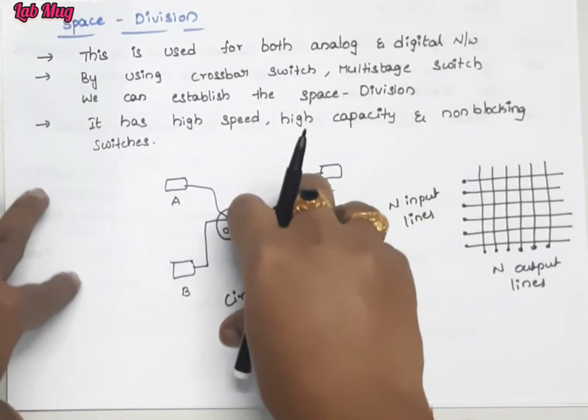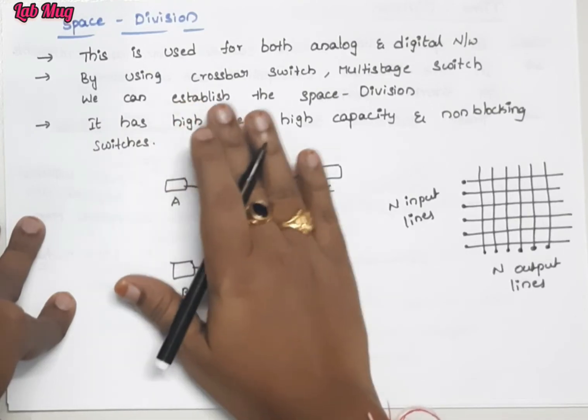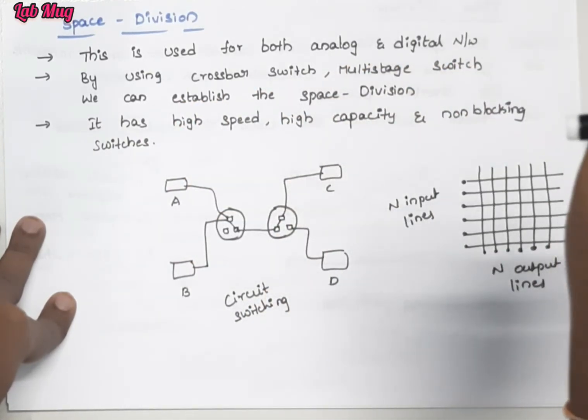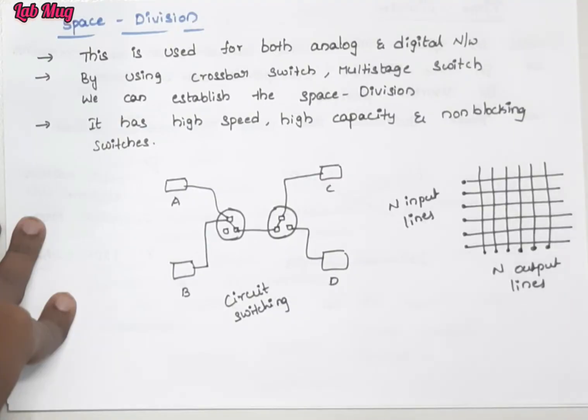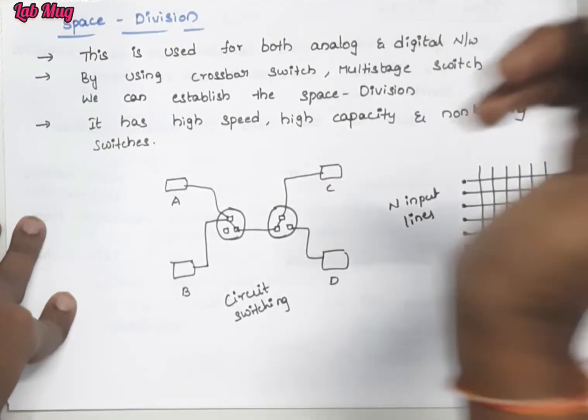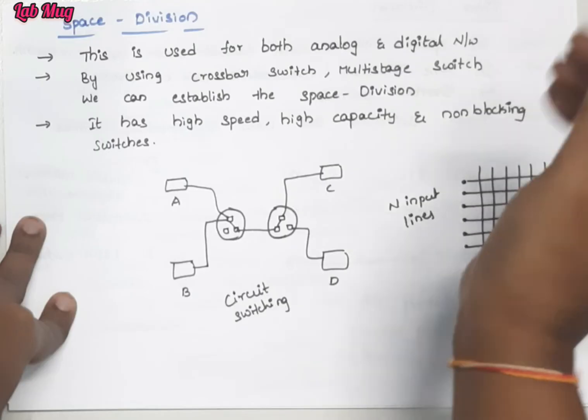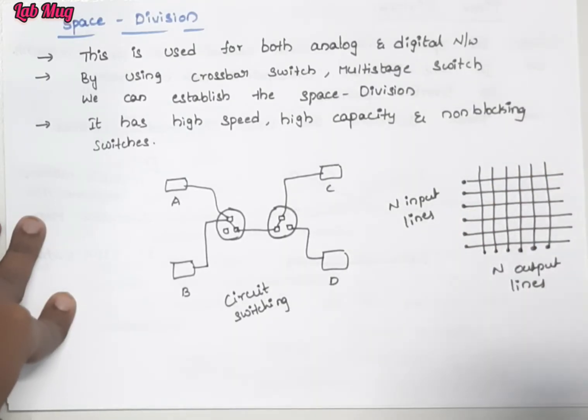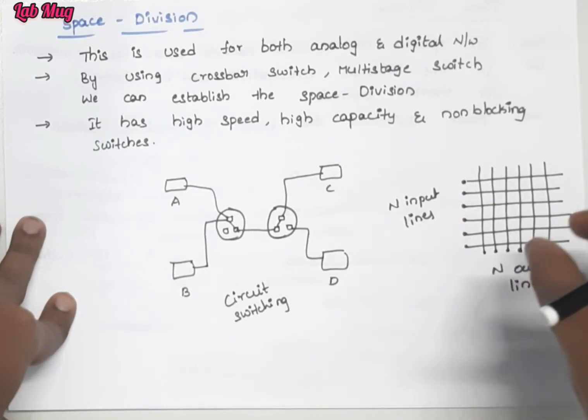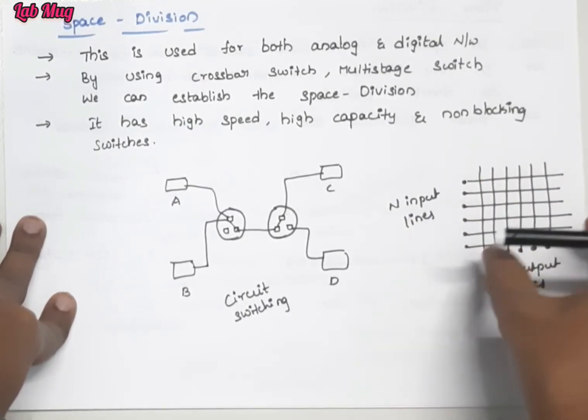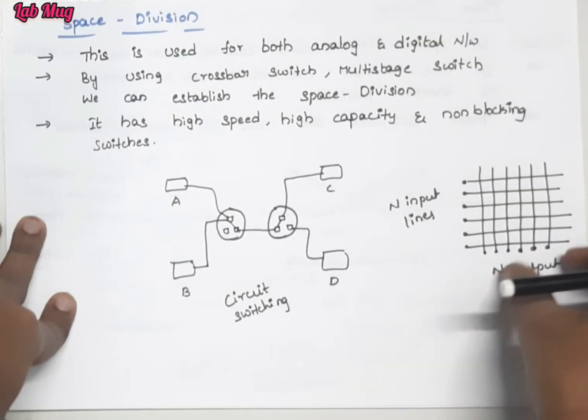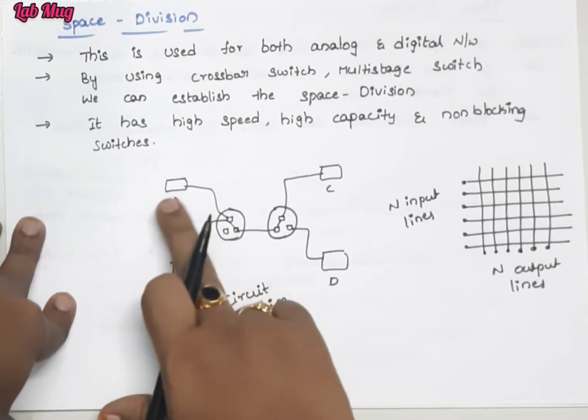First, space division switching - it is for both analog and digital networks. We have two types of networks: analog and digital. In both networks we use space division. Here we use crossbar switches and multi-stage switches to establish space division. By using crossbar switches with input lines and output lines, we create these combinations.